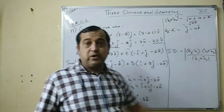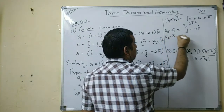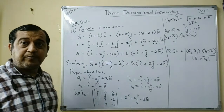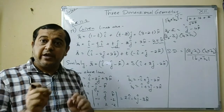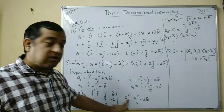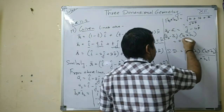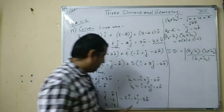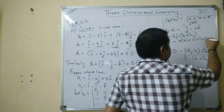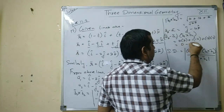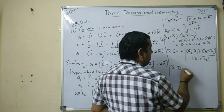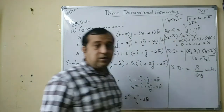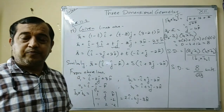In the numerator, take the dot product of (a2 - a1) with (b1 × b2). For dot product: i-components: 0 × 2 = 0; j-components: 1 × (-4) = -4; k-components: (-4) × (-3) = 12. Total = 0 - 4 + 12 = 8. Therefore, shortest distance = 8 / √29 units.